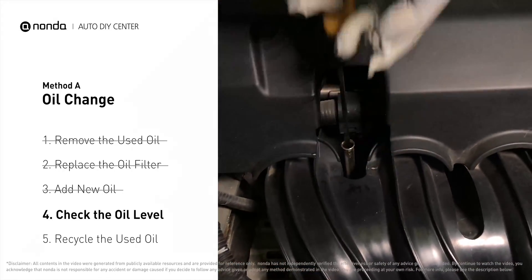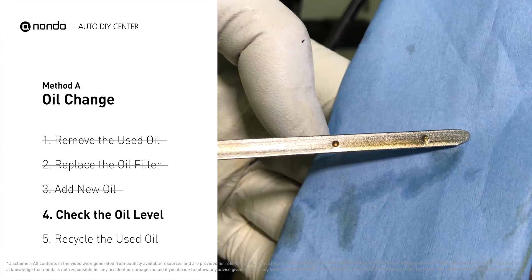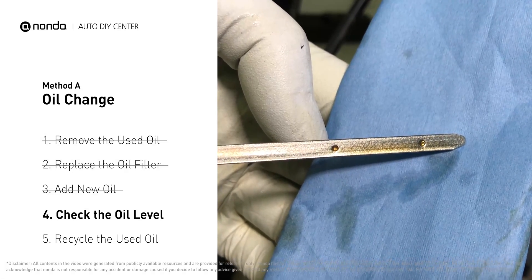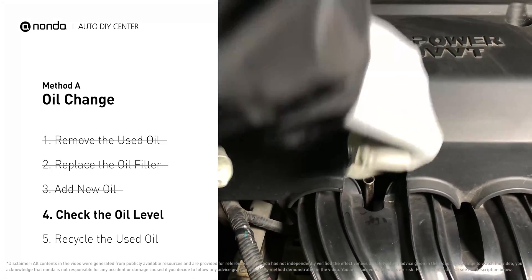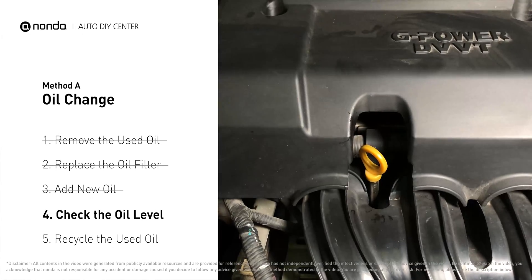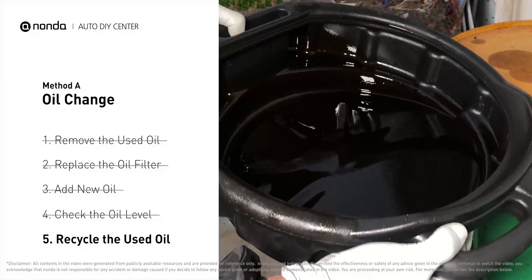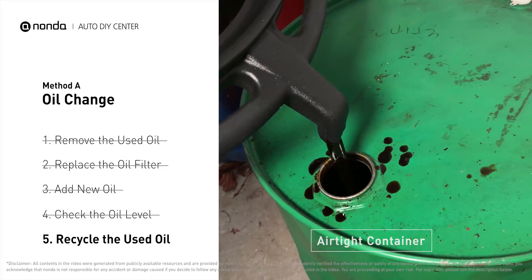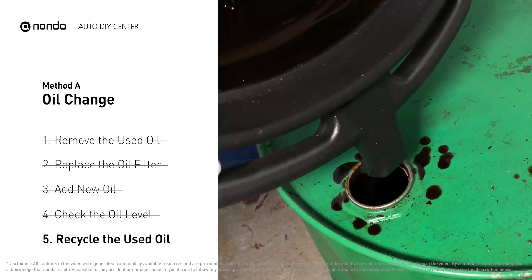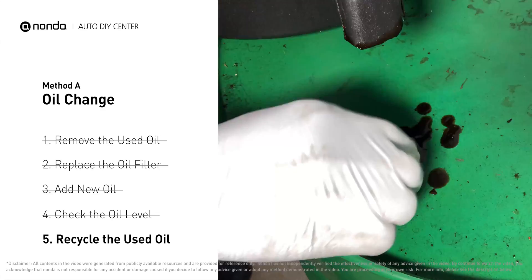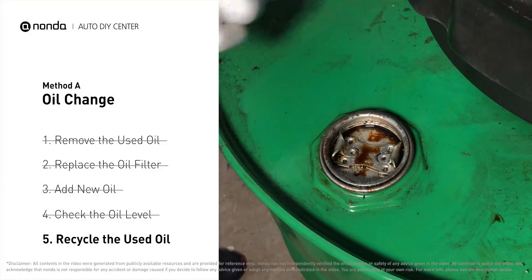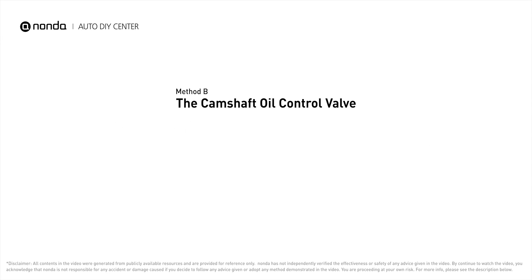Replace the dipstick and pull it out again. The oil should be near the top dot or fill line. If it is close to the lower dot, you'll need to add more oil. If your oil levels are good, replace the dipstick and shut the hood. Place the used oil from your collection pan into an airtight container with a screw-on cap — make sure the oil is cooled before transferring. Used motor oil can be recycled at most auto stores or recycling centers.